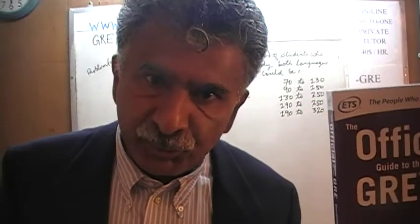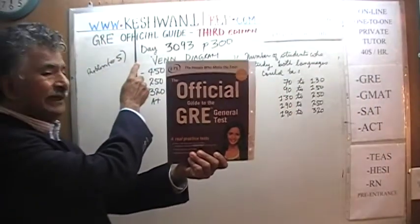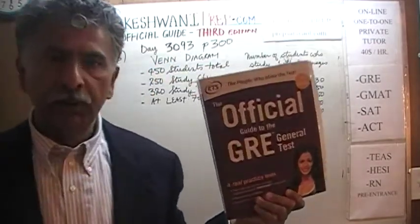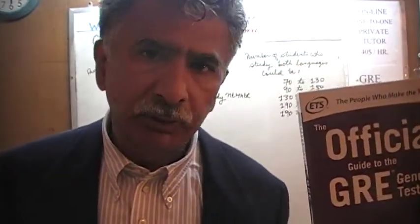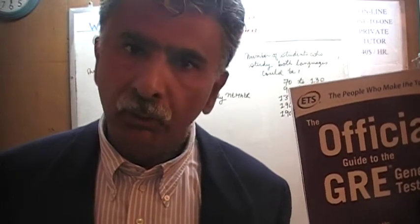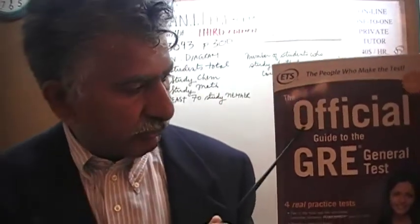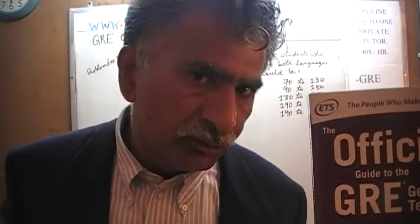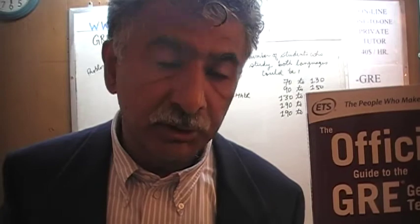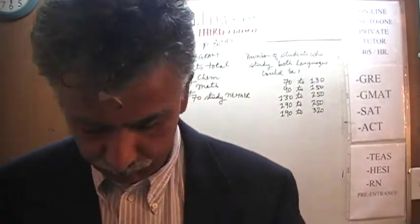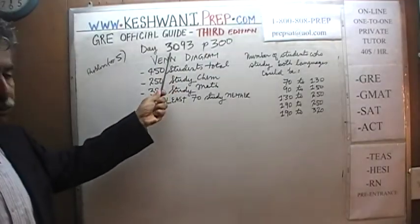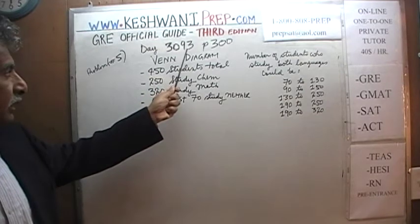Hello, my name is Keshwani — that's K-E-S-H-W-A-N-I. We are here because we want to prepare for the GRE. We have been solving math problems out of this book, the Official Guide to the GRE, the third edition. If you do not own this book already, purchase one immediately — you are going to need it. Today is our lesson number 93, or day 3093; the three indicates we are in the third edition, day 93.